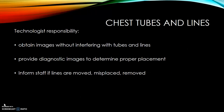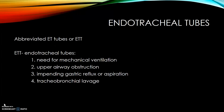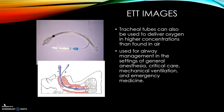When working with chest tubes and lines, the technologist's responsibility includes obtaining images without interfering with the tubes and lines, providing the diagnostic image to determine proper placement, and informing staff if lines are moved, misplaced, or removed. Endotracheal tubes, also known as ET tubes, are mechanical ventilation devices used for upper airway obstructions; they prevent gastric reflux or aspiration and enable tracheal bronchial lavage. They are also used to deliver oxygen in higher concentrations and are used for airway management in general anesthesia, critical care, mechanical ventilation, and emergency medicine.